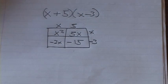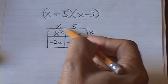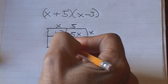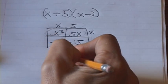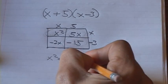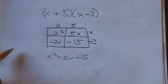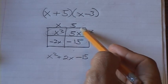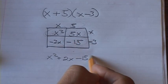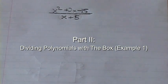Now here's what's interesting: diagonally, you have your x squared terms, then 5x and negative 3x. Usually your diagonal terms are like terms. So you have x squared, then 5x minus 3x which gives 2x, and then negative 15. You just add up all the terms inside the boxes, and there's your answer: x squared plus 2x minus 15.